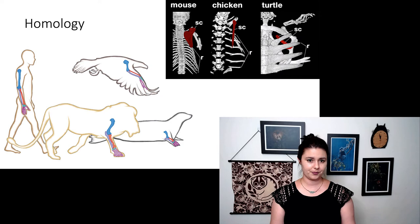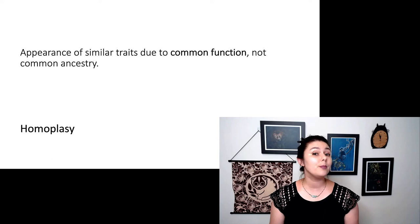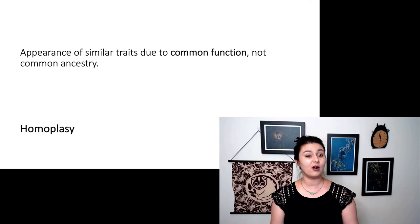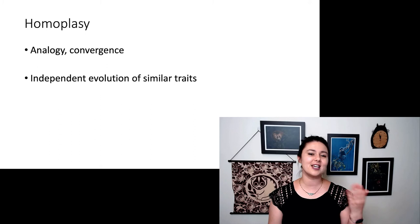Let's contrast that with homoplasy. Homo still means same, so we have some similarity here. But now we have plasy. This means the appearance of similar traits due to common function, not common ancestry. When we are looking at traits, we do want to try and figure out are they homologous or are they homoplastic? One confusing thing here is there are actually two different synonyms for homoplasy. You might also hear the words analogy or convergence. This just means the independent evolution of a trait that looks similar.